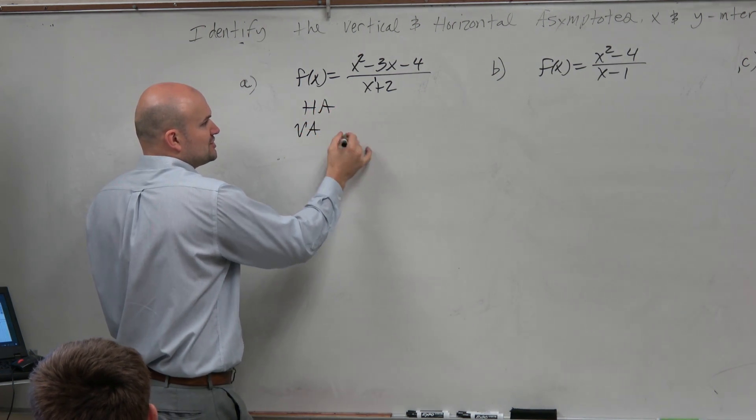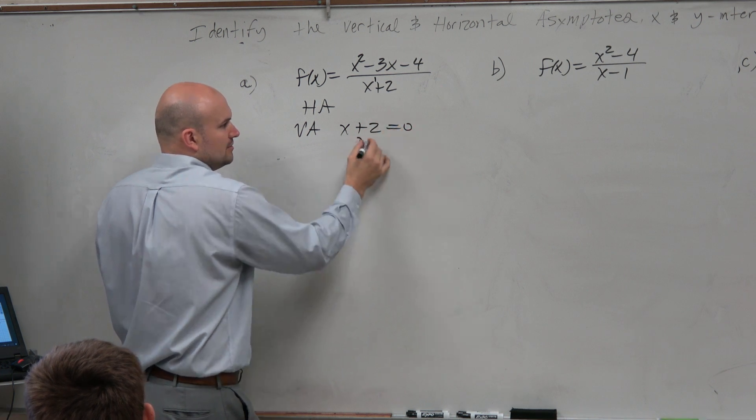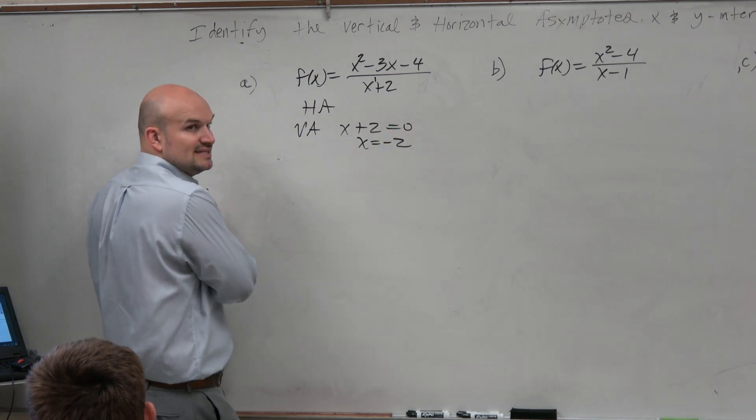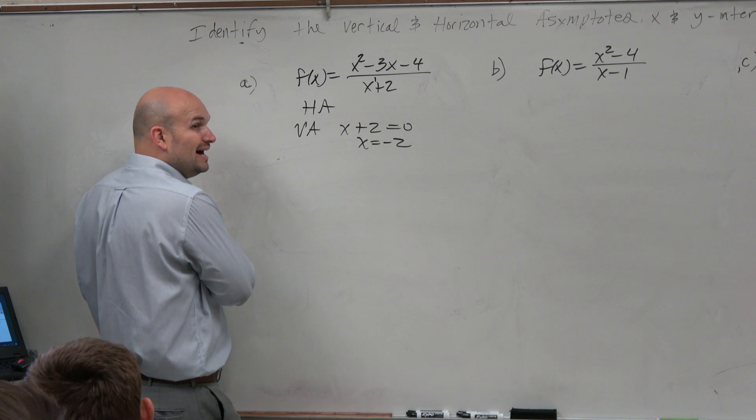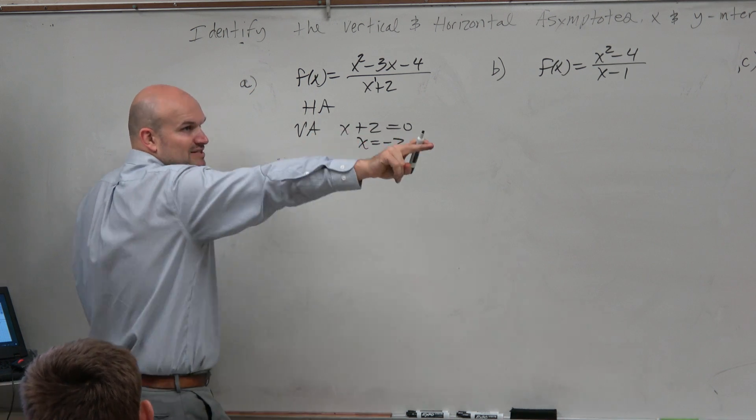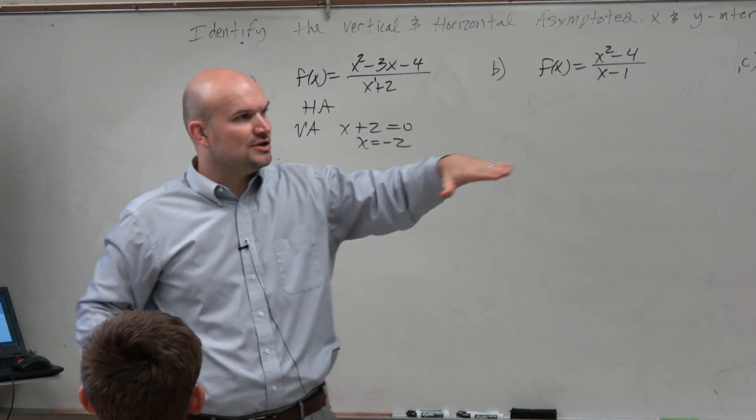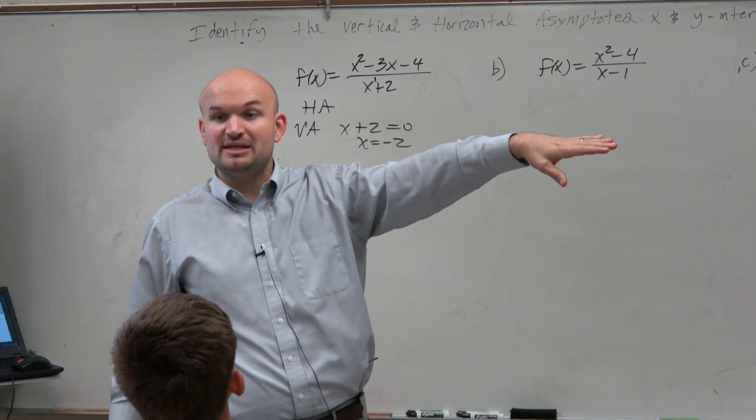Vertical asymptote is just the denominator set equal to 0. That's about as easy as it gets. But the problem is when we have no horizontal asymptote, we have the opportunity for an oblique asymptote.